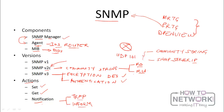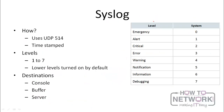Now let's move on to syslog. Syslog is just a systems log that's sent by a network device. All the time we've been configuring, we've seen things like 'configured from console by console,' or 'line protocol on FastEthernet 0/1 is down.' These are examples of syslog messages, and they are on by default.